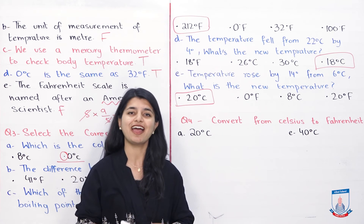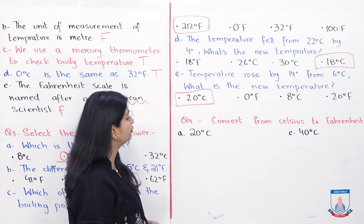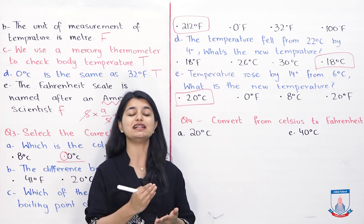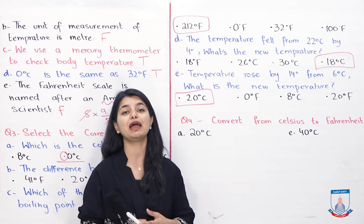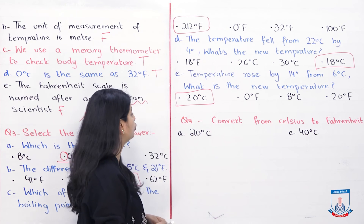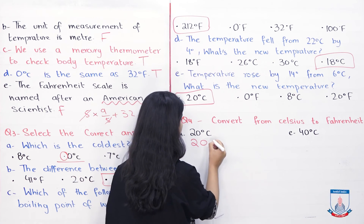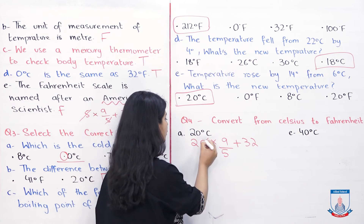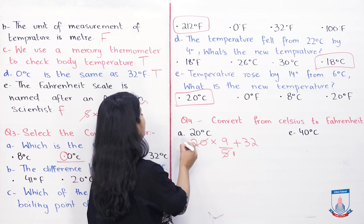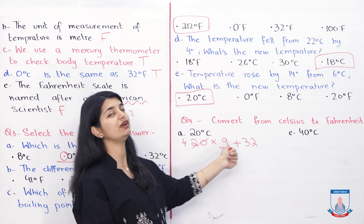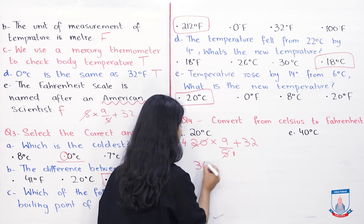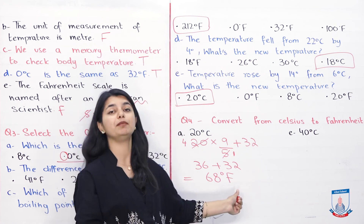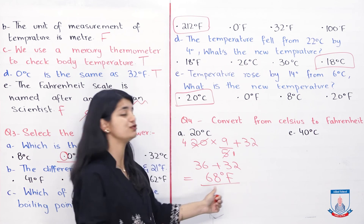We are done with the first three questions. Question number 4 is convert from Celsius to Fahrenheit. You multiply by 9 over 5 and add 32. For Part A, 20 degrees Celsius: 20 into 9 over 5 plus 32. 20 and 5 cancel to give 4, then 4 into 9 is 36, plus 32 equals 68 degrees Fahrenheit. Don't forget to add the unit.